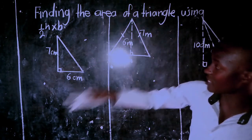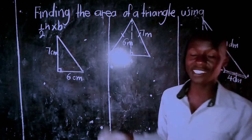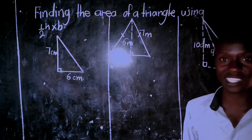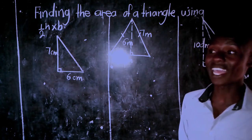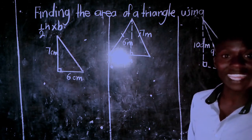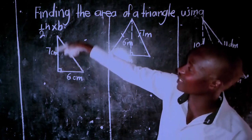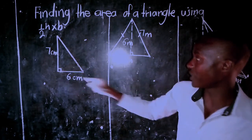The height stands perpendicular — this is the height and this is the base. The base is the line where the triangle sits, and the height is the line standing perpendicular, making 90 degrees with the base.